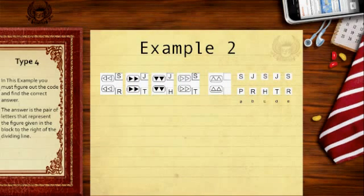Example two. In this example, you're given four different shapes and asked to find the same sort of answer. Two letters that represent the shapes in some way and it's a code.